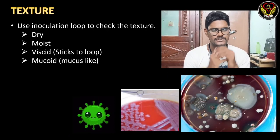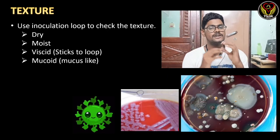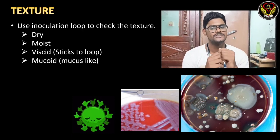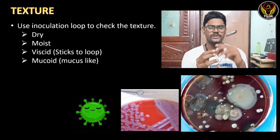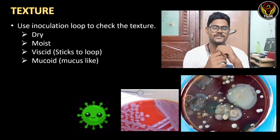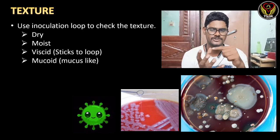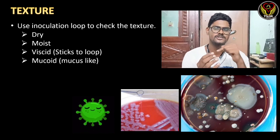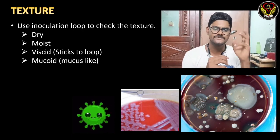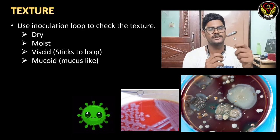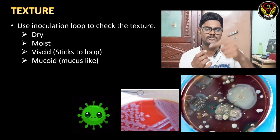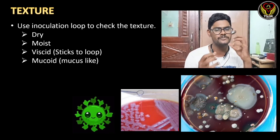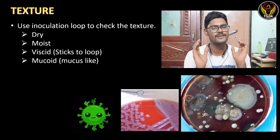Next is texture. To study the texture of colonies we can use a sterile inoculation loop. The types are: dry (powdery, won't stick to the loop), moist (watery, looks like water when touched with the loop), viscid (very sticky to the loop, comes off like bubble gum), and mucoid (has a mucus layer).